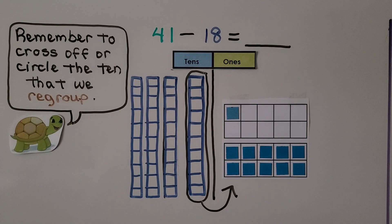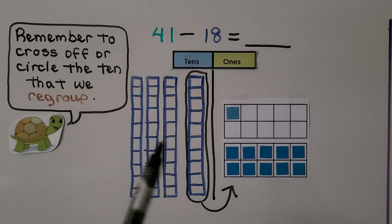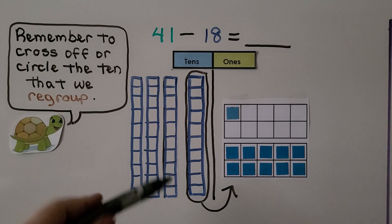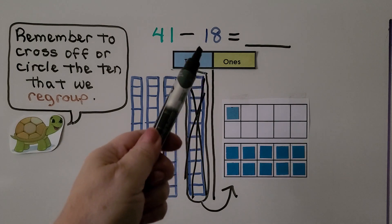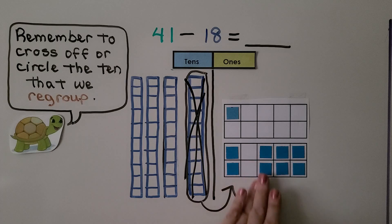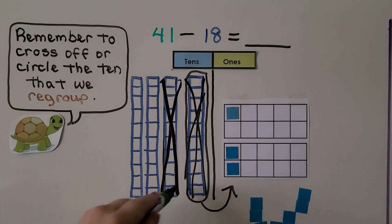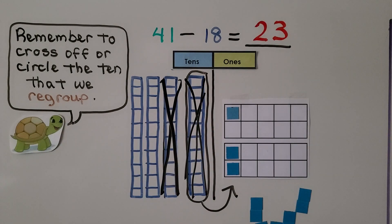Remember to cross off or circle the 10 that we regroup so it's not counted with the remaining 10s. Here we have 41 minus 18. We have 4 10s, 1 one. We're going to take this 10 and turn it into 10 1s, so now it's gone — we cross it off. Now we can take away 8 1s and 1 10. We cross another one off. We count what's left: 2 10s, 3 1s. 2 10s and 3 1s is 23. So 41 minus 18 is equal to 23.